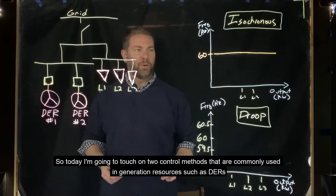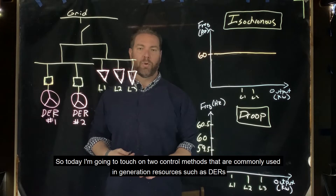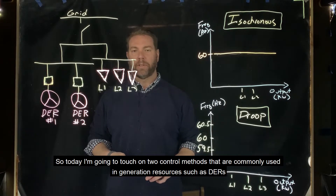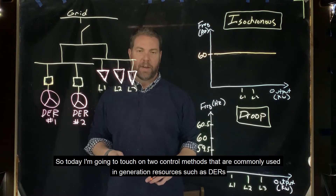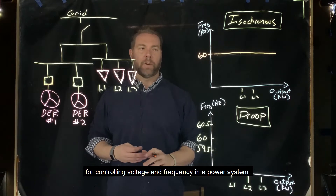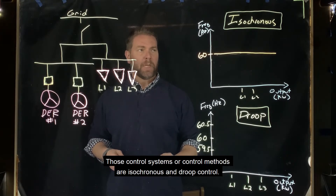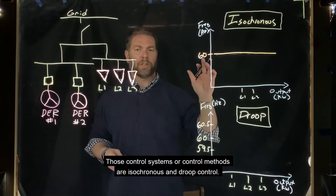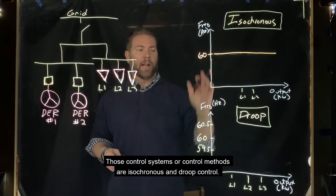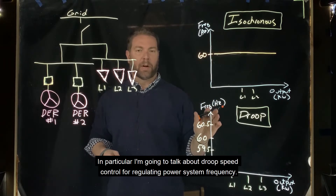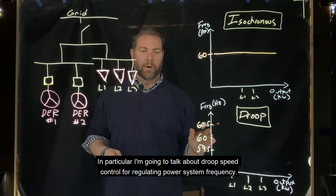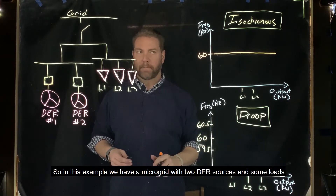Today I'm going to touch on two control methods commonly used in generation resources such as DERs for controlling voltage and frequency in the power system. Those control methods are isochronous and droop control. In particular, I'm going to talk about droop speed control for regulating power system frequency.